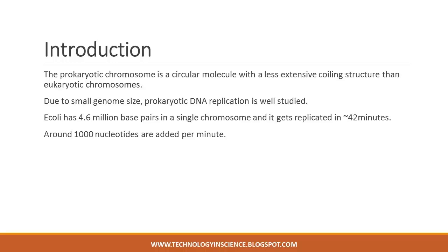This means that approximately 1000 nucleotides per second are added — the process is much more rapid than in eukaryotes. The prokaryotic chromosome is a circular molecule with a less extensive coiling structure than eukaryotic chromosomes, which are linear and highly coiled around proteins. These structural differences necessitate some differences in the DNA replication process between the two life forms.